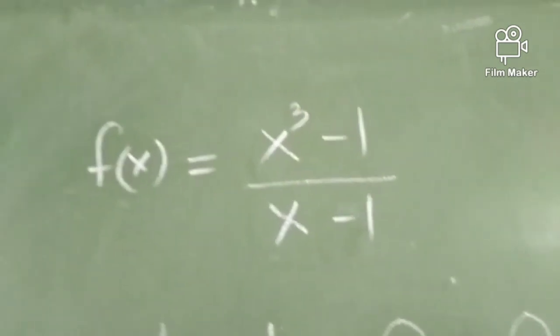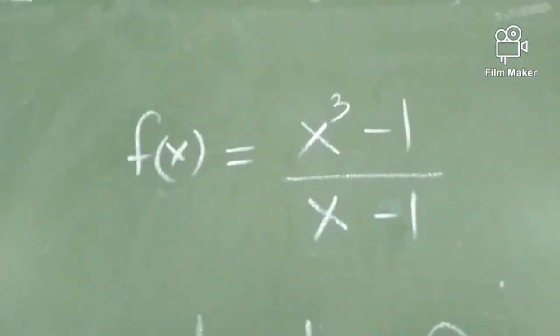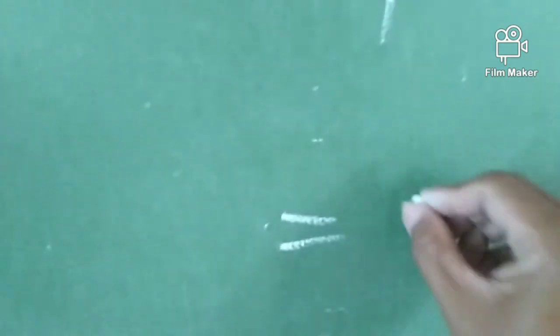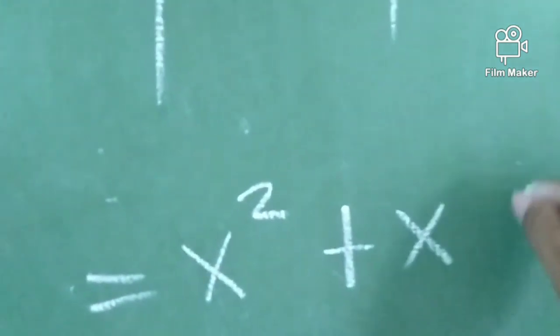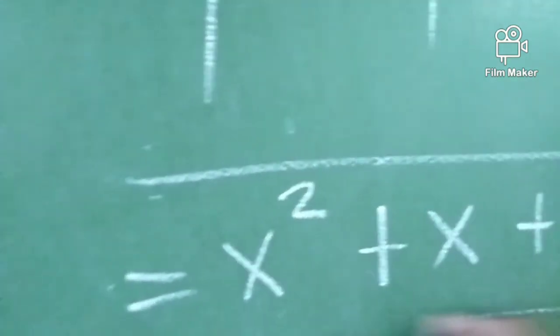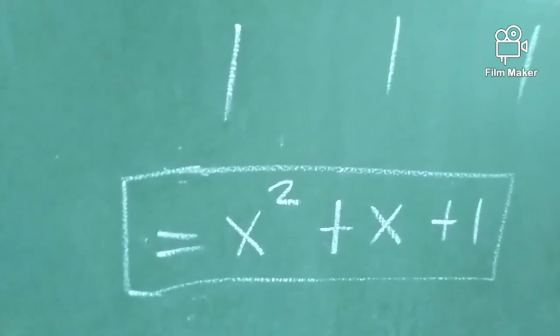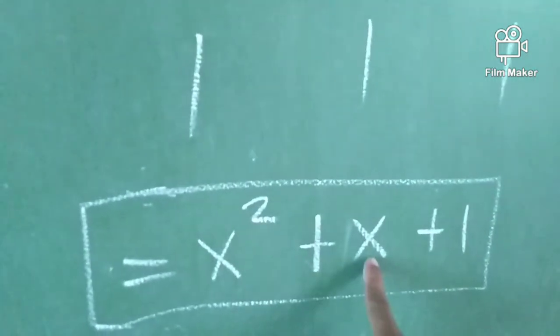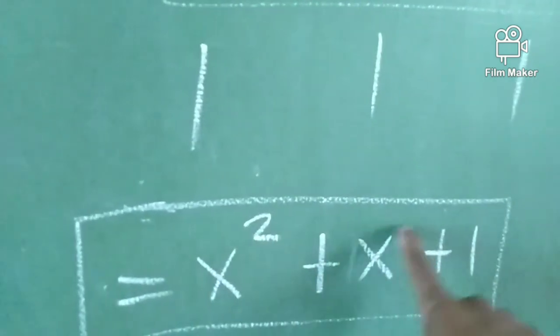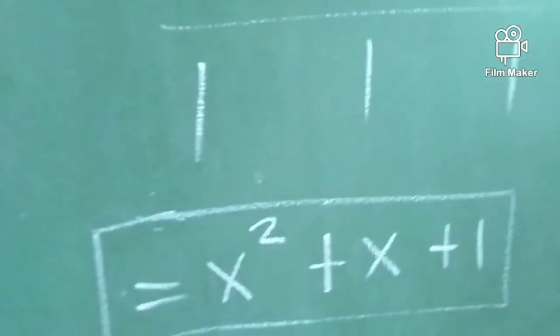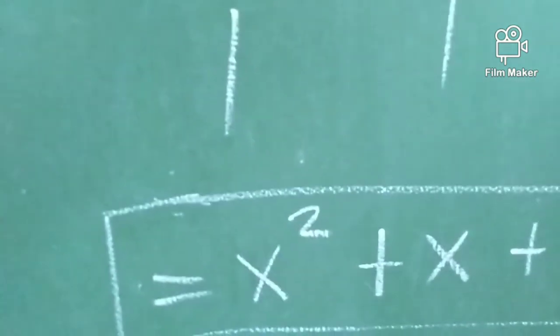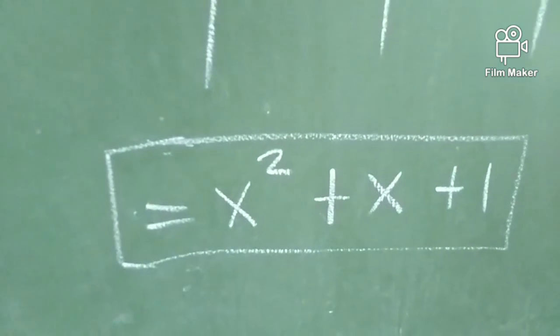Ngayon, tignan natin ulit yung ating sagot dito. We have 3 ang kanyang exponent, so babawasan natin siya. Is equals to x squared plus x plus 1. Ito yung kanyang quotient, or ito yung kanyang sagot. x squared kasi constant 1. x na lang kasi may constant 1 — yung exponent ang tinutukoy ko, bawasan ko ng isa, kaya x na lang. Descending form. And then, a constant 1. Yan ang kanyang sagot.